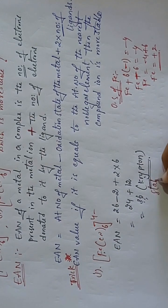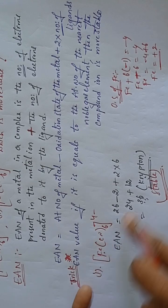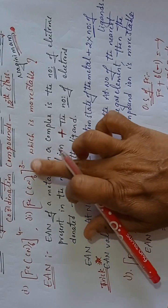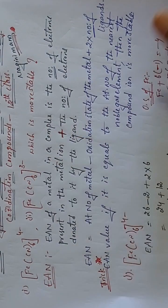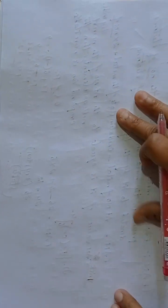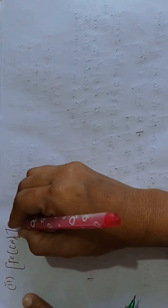[Fe(CN)₆]⁴⁻ is more stable. Now I am going to check the second complex ion: [Fe(CN)₆]³⁻.